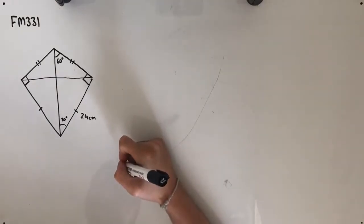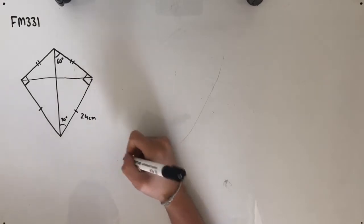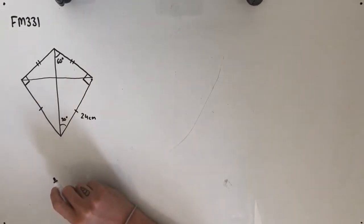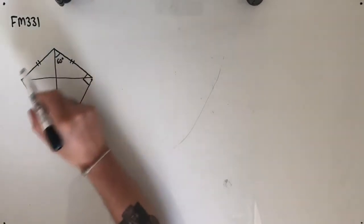Hey guys, welcome to question FM 331 of the Further Maths Fortify Study Guide. This question reads, a kite designer has four triangular cloth pieces and needs to connect them. The measurements of the kite are presented below and we're given this diagram here.